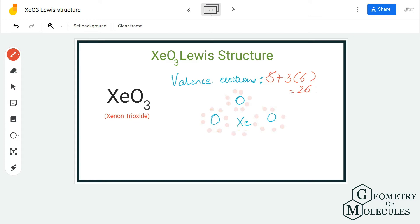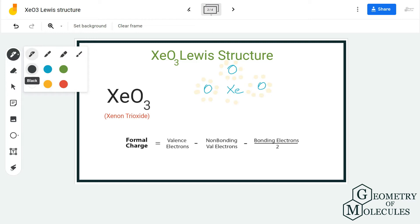Now you might think that this is the most accepted and relevant Lewis structure for xenon trioxide. But hold on, let's check the formal charges for this molecule and find out if this is really the Lewis structure that we can move forward with.